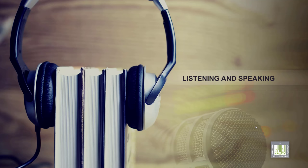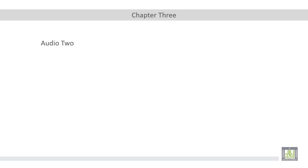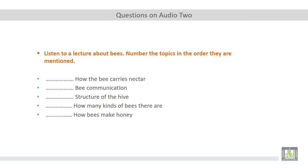So we have five main topics which are going to be discussed in this audio track. Number one, kinds of bees. Two, how bees make honey. Three, how the bees carries nectar. Four, structure of the hive. The hive is the place where bees live. Five, bee communication.